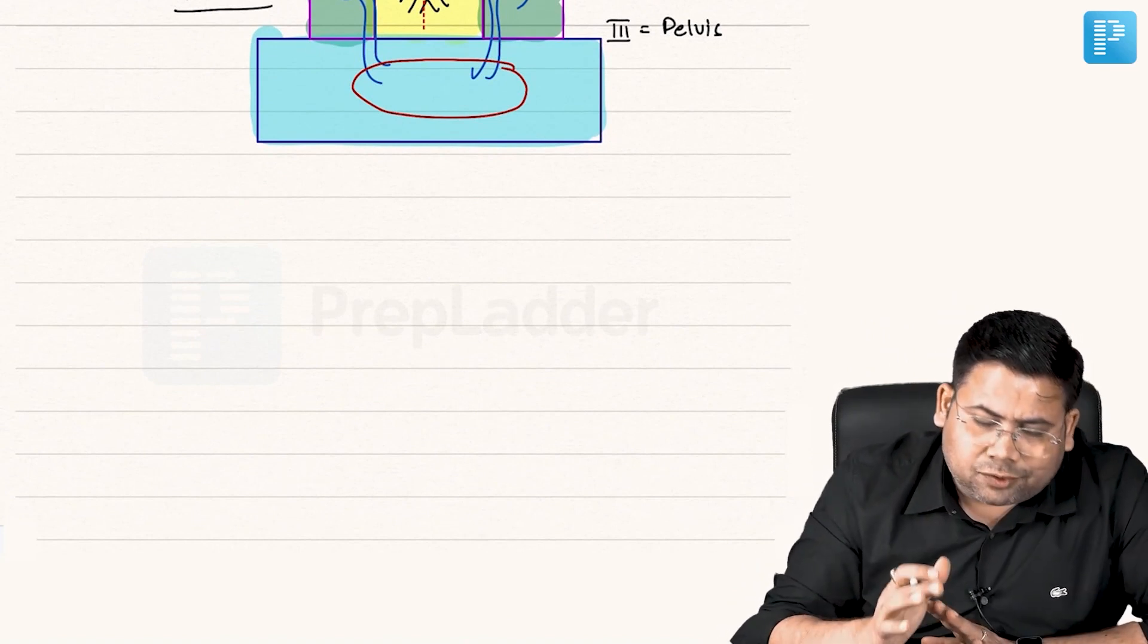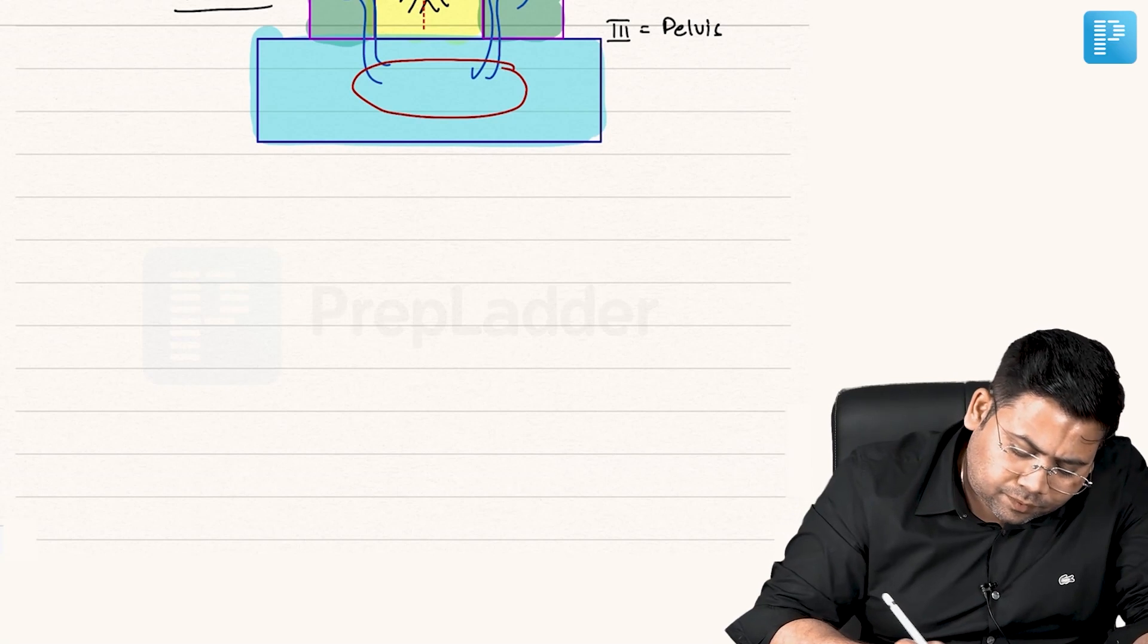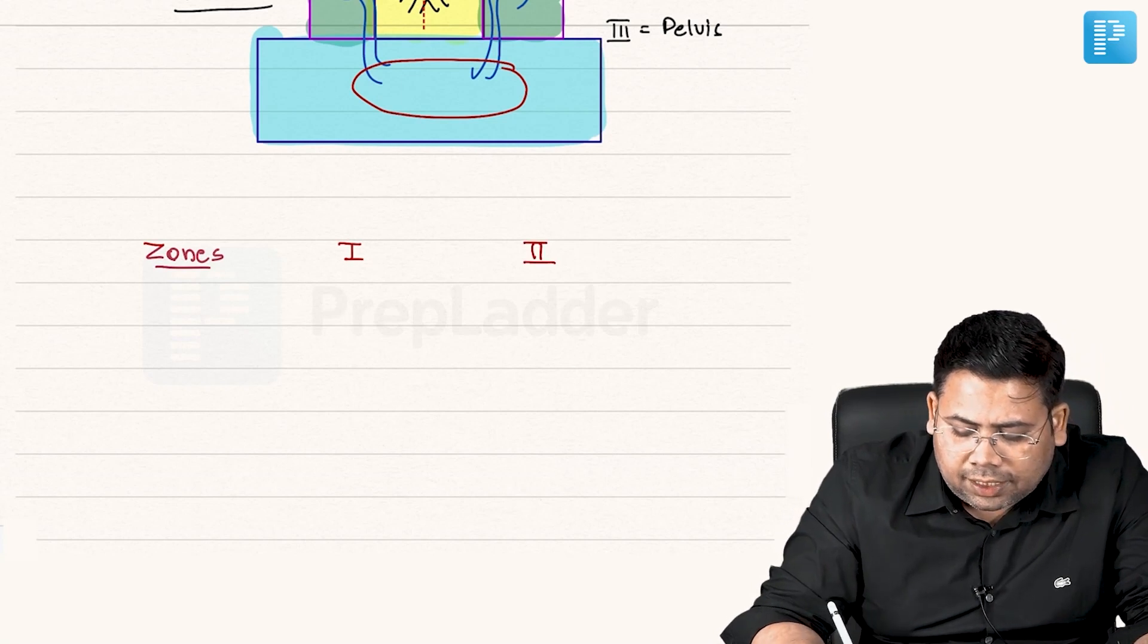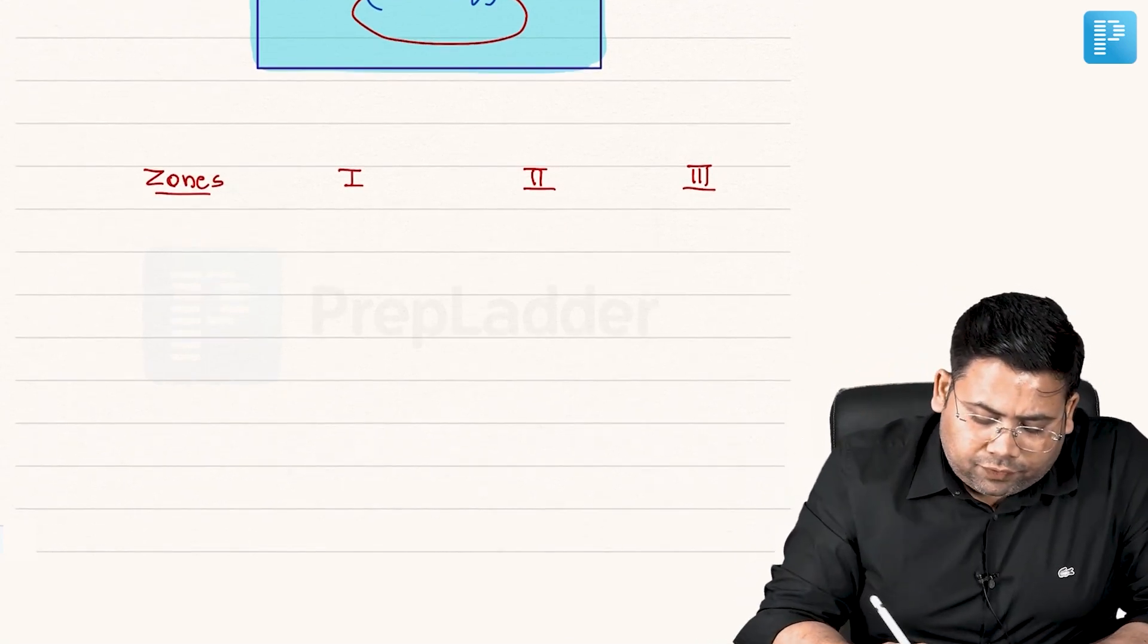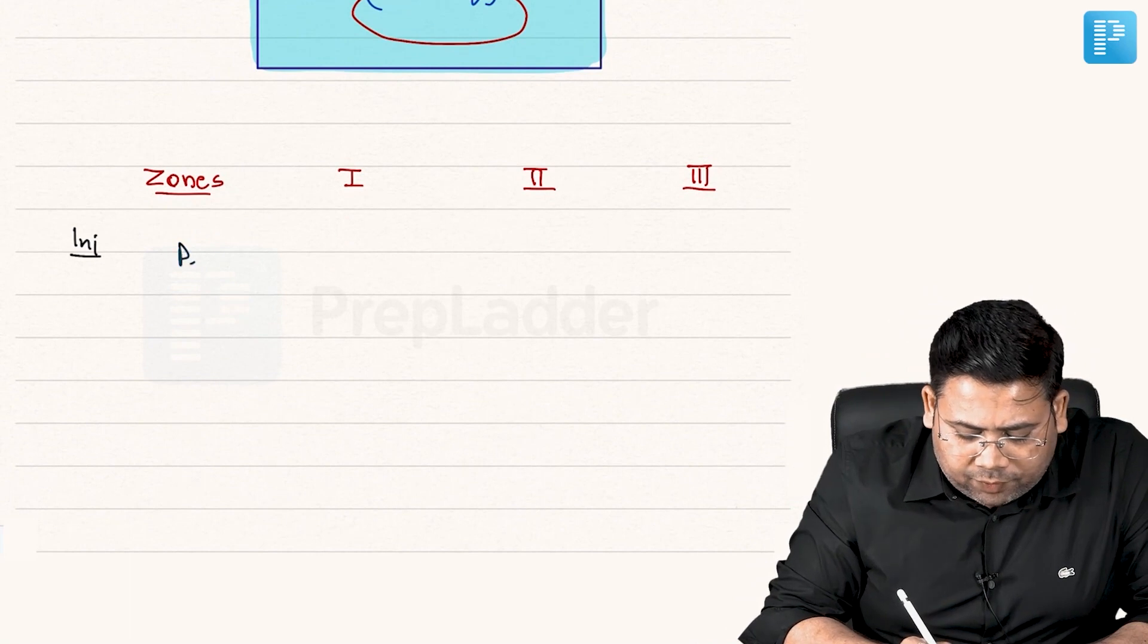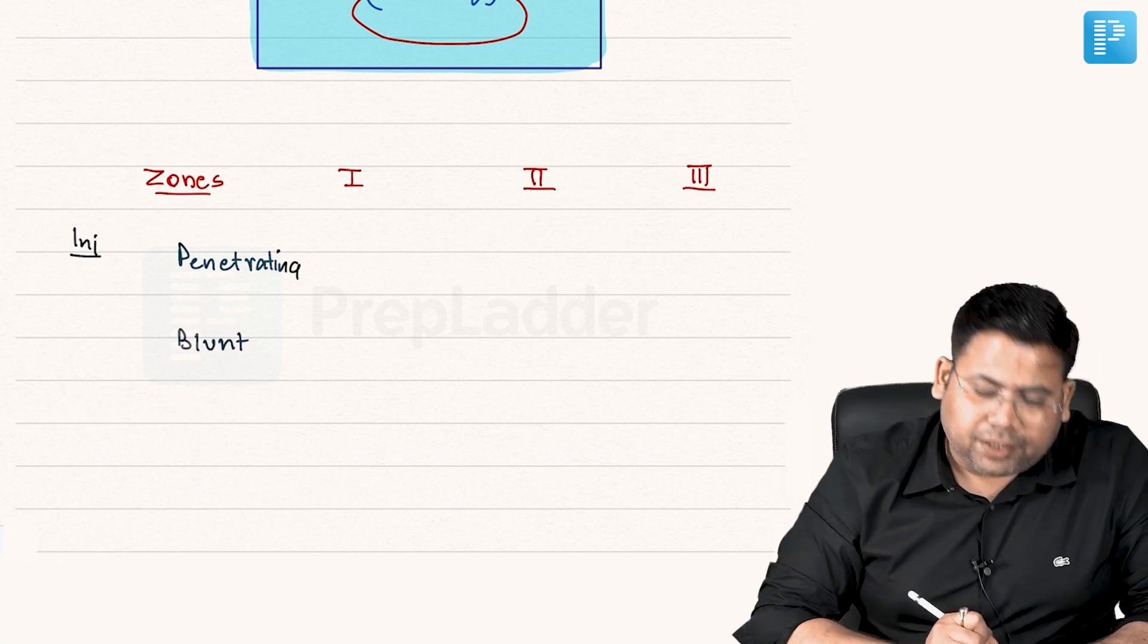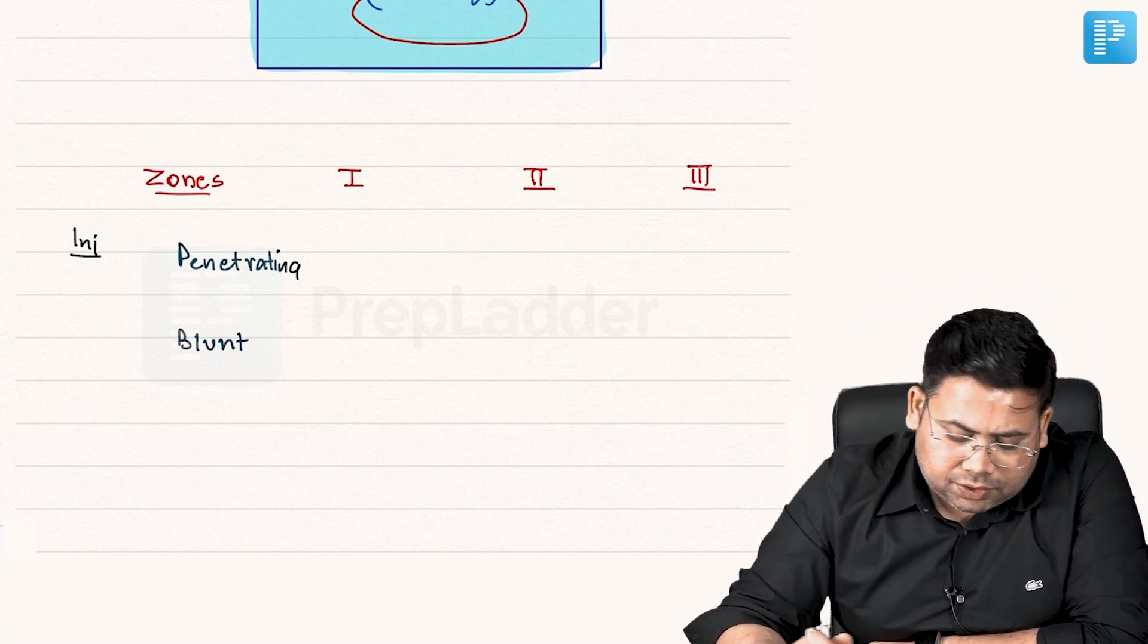Next is, let us try to understand how the things present and how we manage. On one side, let us write the zones. Zone one, zone two, and zone three. And on one side, we will write the injury. Either it would be penetrating injury or it would be a blunt trauma.